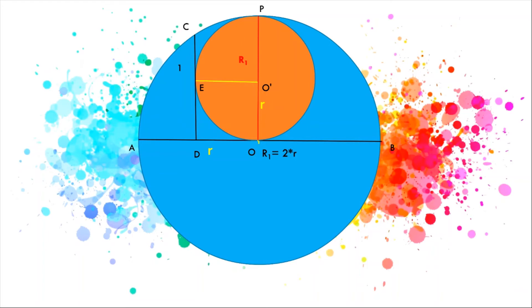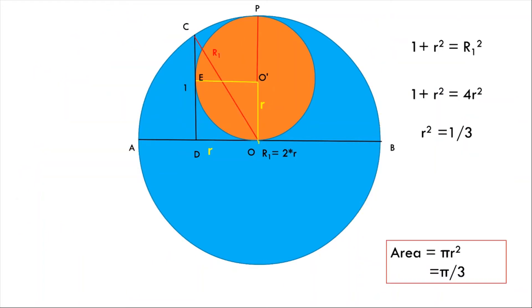Now we join C and O. Triangle CDO is a right triangle, so by the Pythagorean theorem, CD² + DO² = CO². This becomes 1 + r² = R₁², where R₁ = 2r. Therefore, 1 + r² = 4r², which gives r² = 1/3.